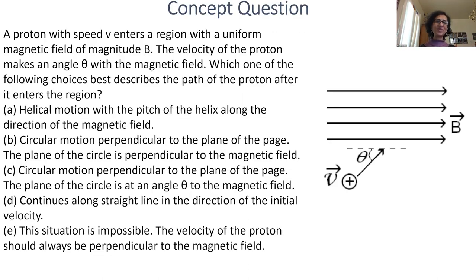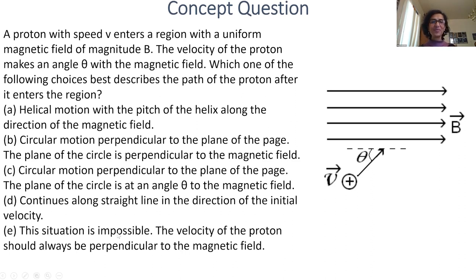Final concept question on this topic: a proton with speed V enters a region with uniform magnetic field B, and the velocity makes angle θ with the magnetic field. Which best describes the path — helical motion with pitch along B, circular motion perpendicular to the page with the circle perpendicular to B, circular motion at angle θ to B, straight-line motion, or impossible? Stop the video and think about it — you learn the most when you struggle with it first.